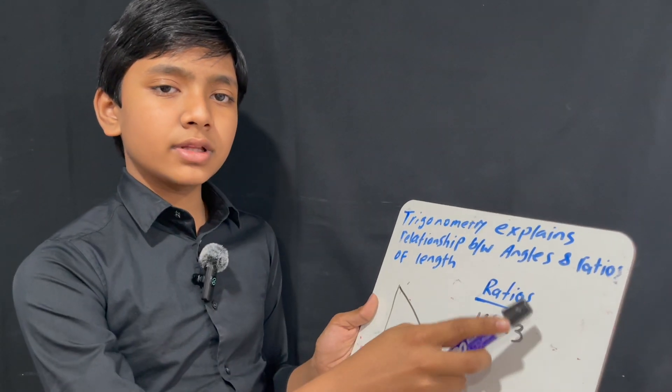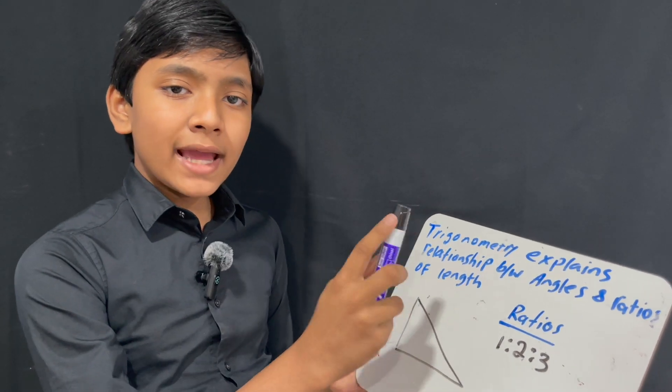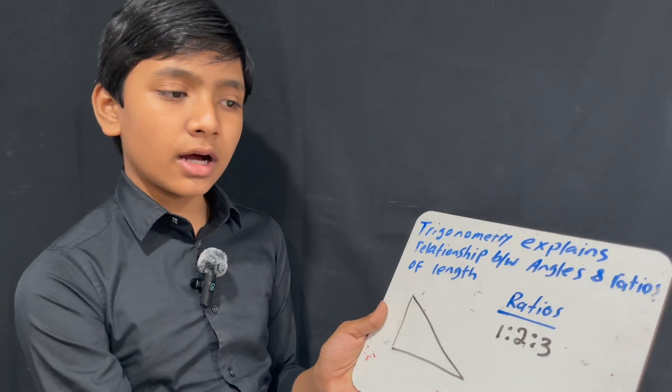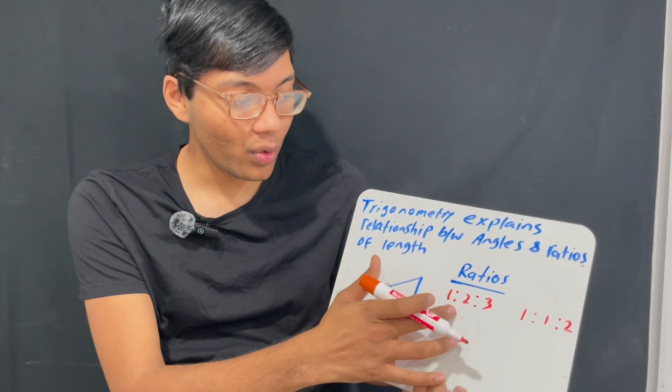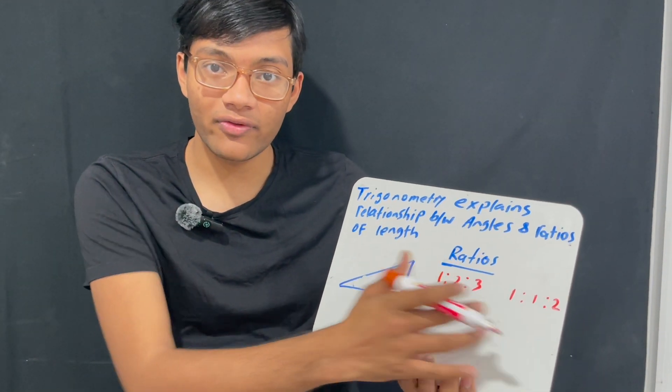Trigonometry explains the relationship between angles and their corresponding opposite sides. Today we're going to look at how to name a triangle and what the two most famous ratios for a triangle are.